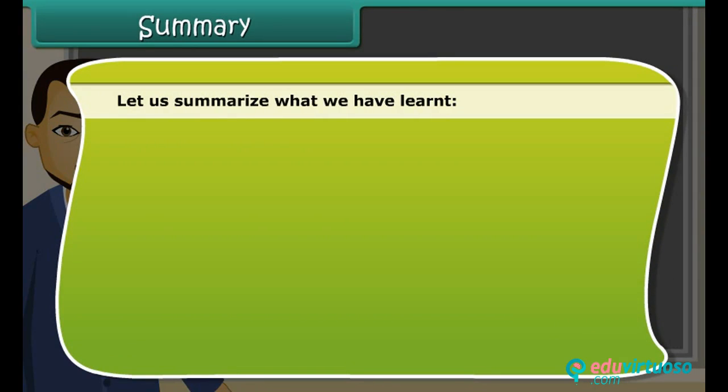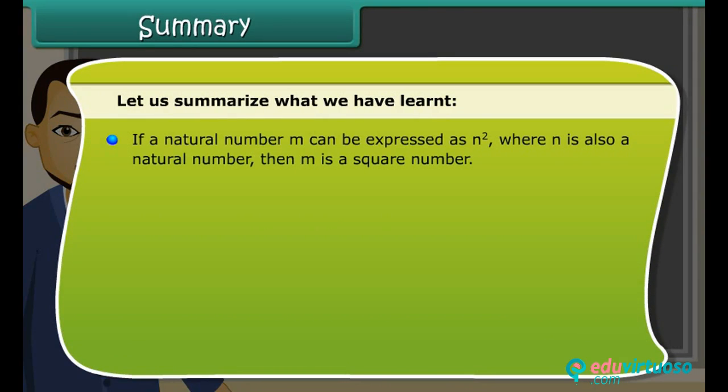Let us summarize what we have learned. If a natural number M can be expressed as N square where N is also a natural number, then M is a square number. The perfect squares are the squares of the whole numbers.